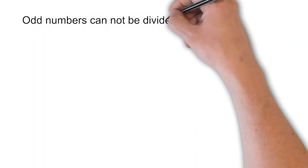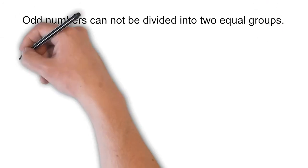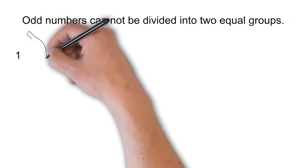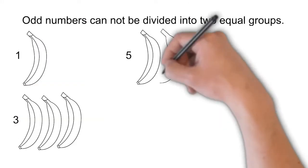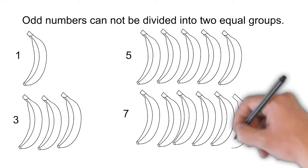Odd numbers cannot be divided into two equal groups. Let us assume that we have bananas in counts of 1, 3, 5 and 7.